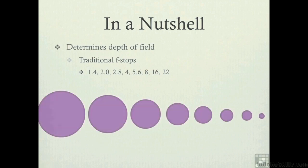It might look something like this. That's the 1.4 on the left, that's the f-22 on the right. So the light comes in through the glass, bends down to get through that hole, and then expands out again on the other side.